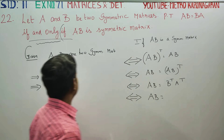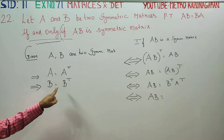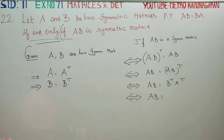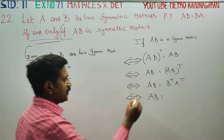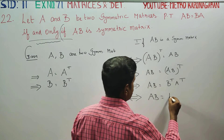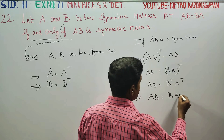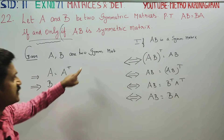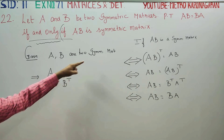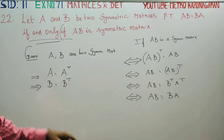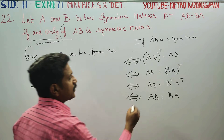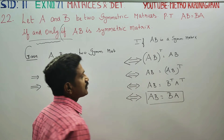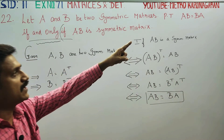B transpose is equal to B and A transpose is equal to A, because they are individually symmetric matrices. So what is the result? AB is equal to BA.